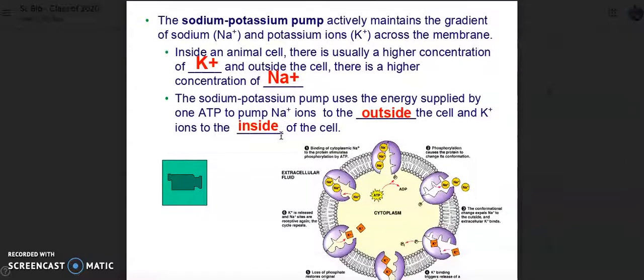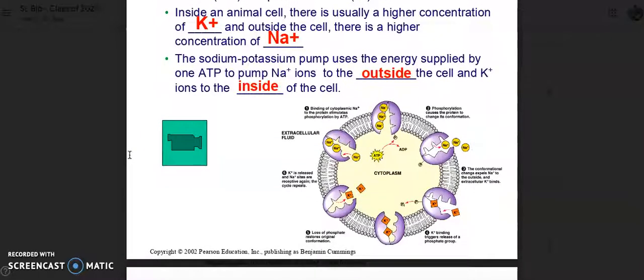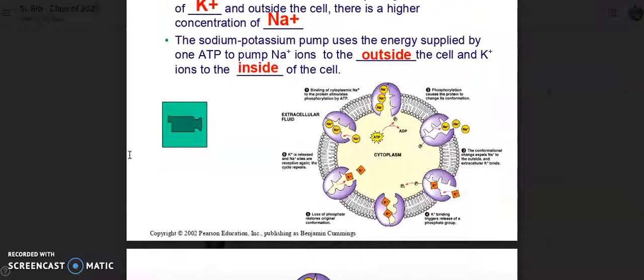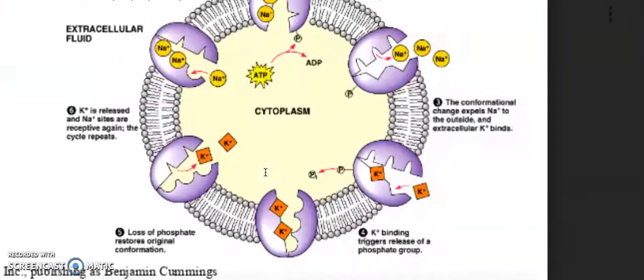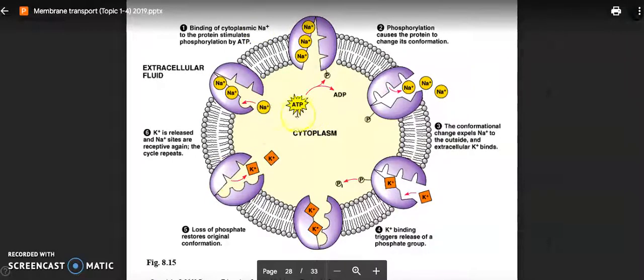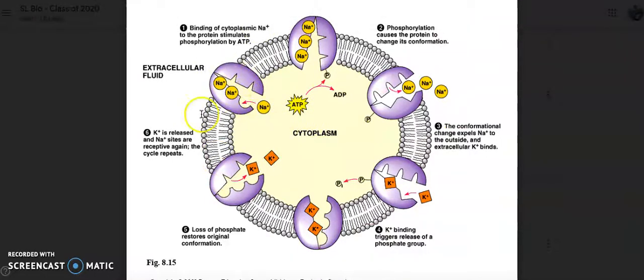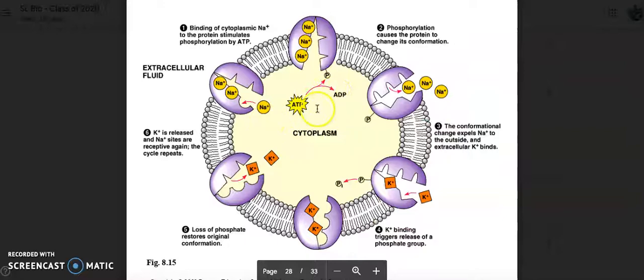The sodium-potassium pump actively maintains the gradient of sodium and potassium ions across the membrane. Inside an animal cell, there is usually a higher concentration of potassium ions, and outside of the cell, there is usually a higher concentration of sodium. The sodium-potassium pump uses the energy supplied by one ATP to pump sodium ions to the outside of the cell and potassium ions to the inside of the cell. Three sodiums would go in and then exit, and then two potassium could go in.